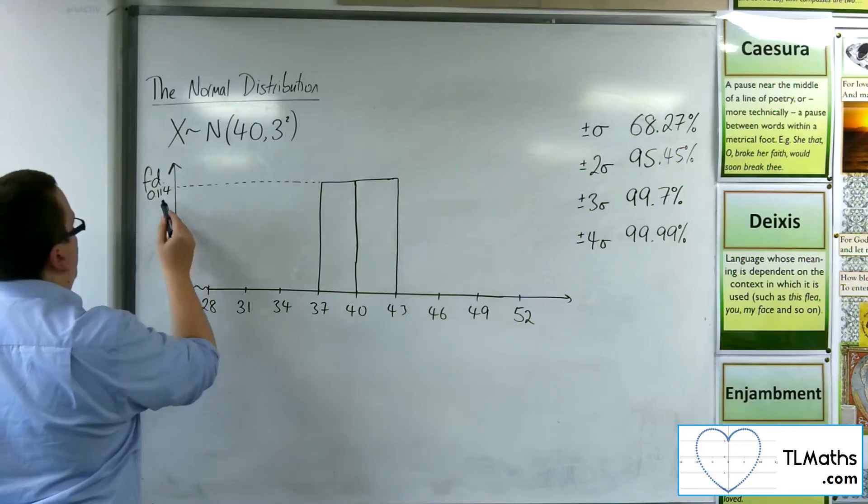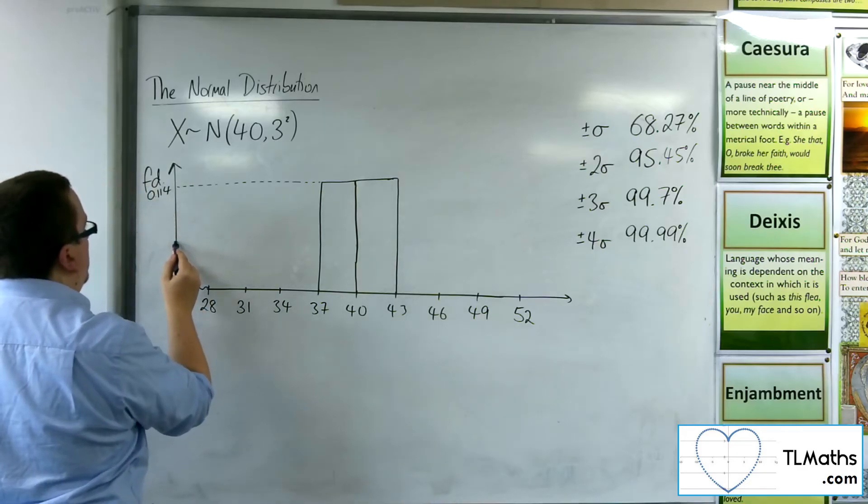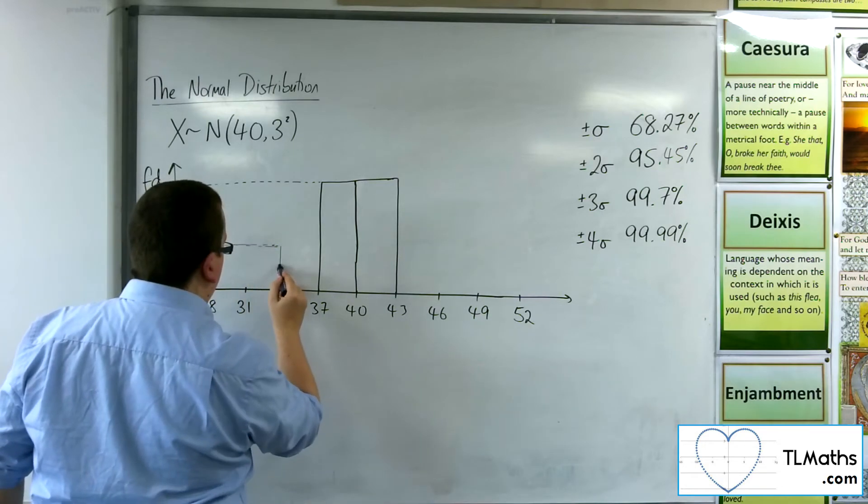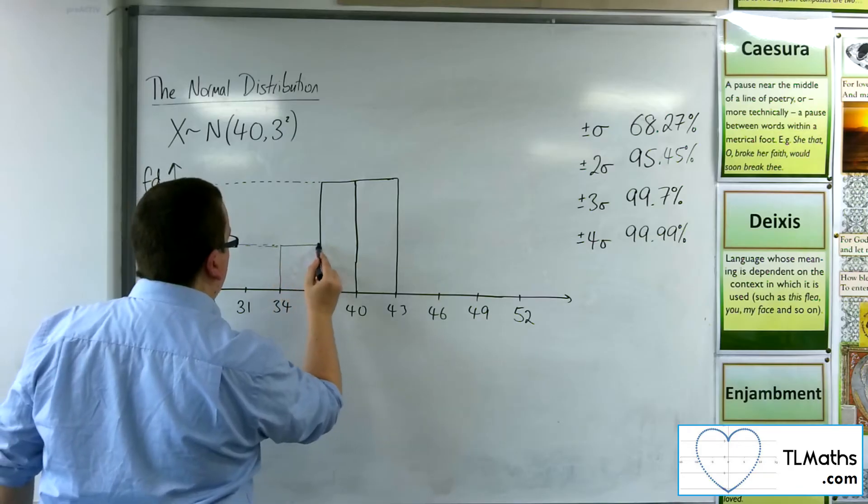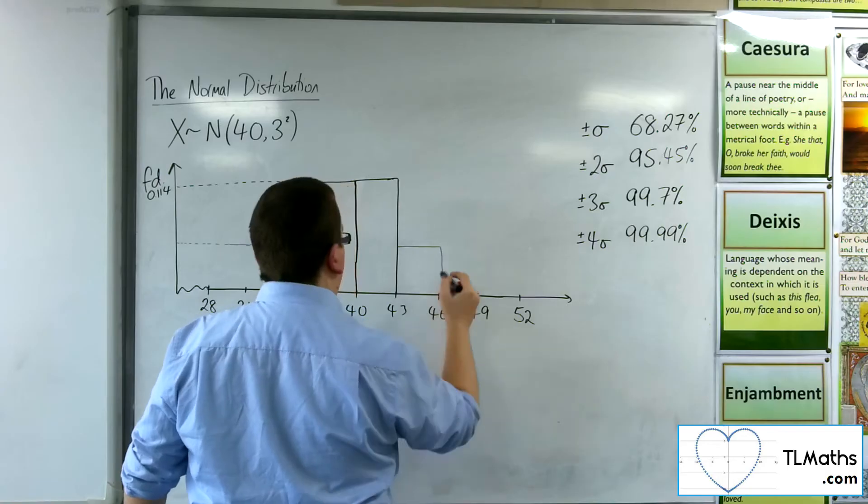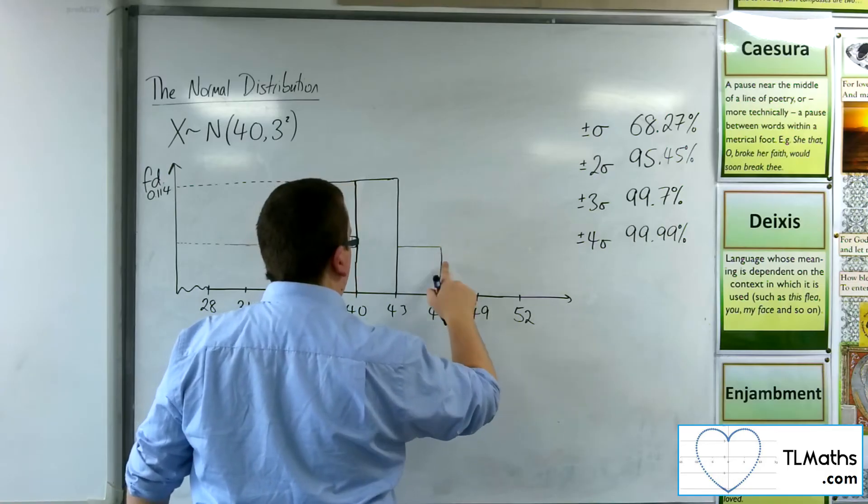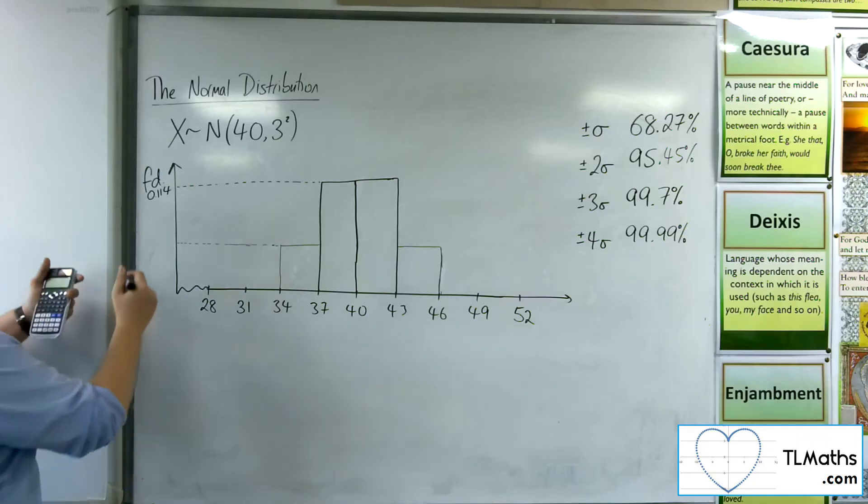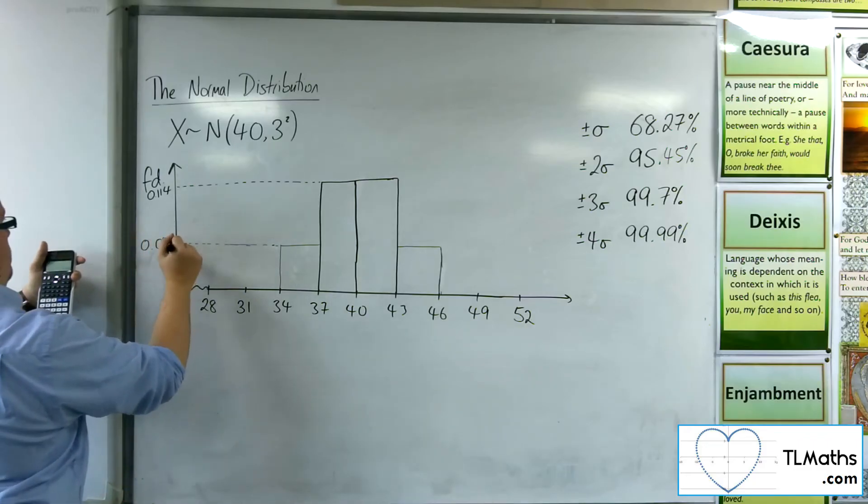So, 0.0453 is just under halfway, isn't it? So, that'll do, I think. So, we'll put it in there. So, 0.0453.